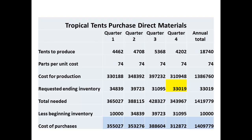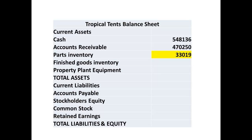There are two figures we need for current assets concerned with inventory. The first is the value of parts to make tents, which can be obtained from the ending inventory of the direct materials budget. We have highlighted the figure here: it is $33,019, and we enter that into the balance sheet as the parts inventory figure.